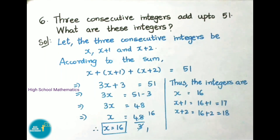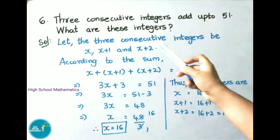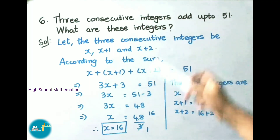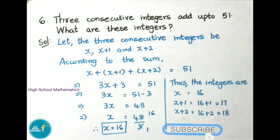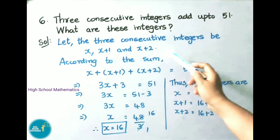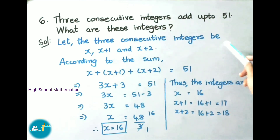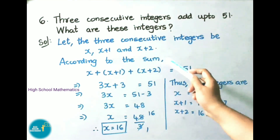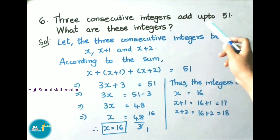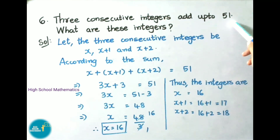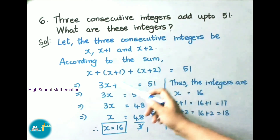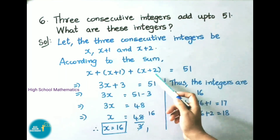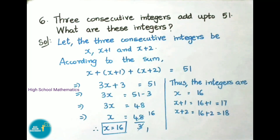See now question number 6: three consecutive integers add up to 51. What are these integers? Let the three consecutive integers be x, x plus 1 and x plus 2. According to the sum, on adding all three integers we will get 51. So: x plus x plus 1 plus x plus 2 equals to 51.